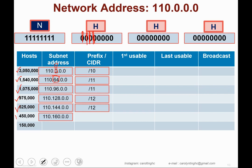For 450,000 hosts, the suggested CIDR is slash 13. With slash 13, 3 host bits remain. Two to the power of 3 is 8. Adding 8 to 160 gives 168, so the next subnet address is 110.168.0.0.